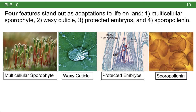A multicellular sporophyte is a fundamental feature of the land plant life cycle. That life cycle is called an alternation of generations because the plant shifts between a multicellular diploid stage and a multicellular haploid stage. One difficult thing to grasp is that the size and dominance of each of these stages changes depending on the group. We're going to start by talking about bryophytes, which are all dominant in the gametophyte stage — the multicellular haploid stage — not the multicellular diploid stage.